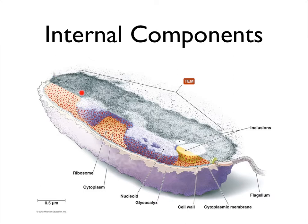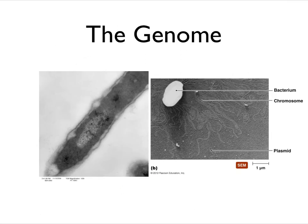Let's start with the stuff inside. The most important thing inside the cell is the genome. In prokaryotes — at least in bacteria — the genome is usually circular, and there's usually a single chromosome. Some things will have multiple copies, but mostly they're going to have a single copy of a single circular chromosome.